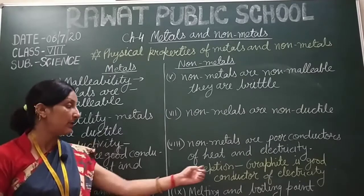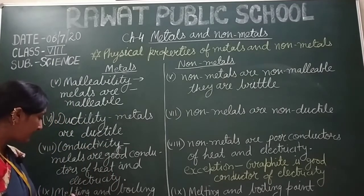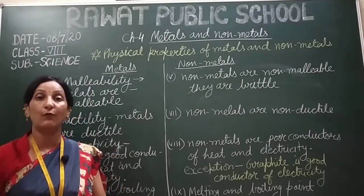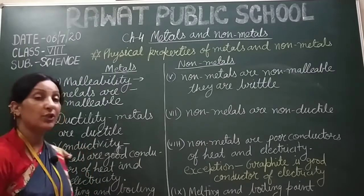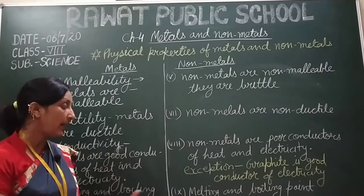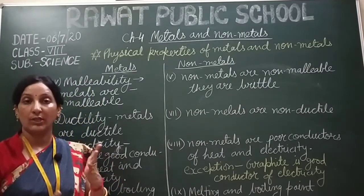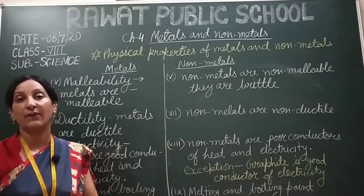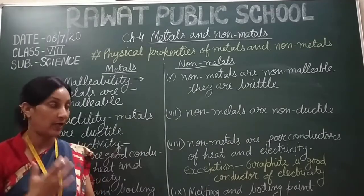The last point of comparison is melting and boiling point. The melting and boiling points of metals are very high. The exceptions are sodium, potassium, and mercury, which have low melting points. On the other hand, the melting and boiling points of non-metals are very low. The exceptions here are graphite and diamond, whose melting and boiling points are very high.